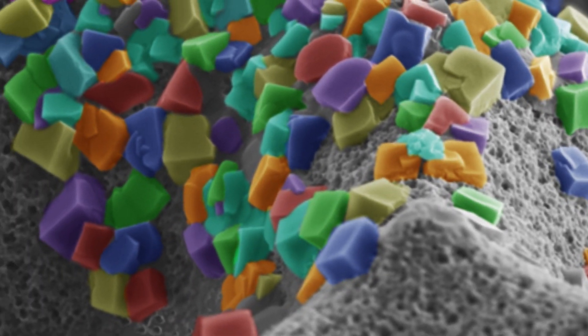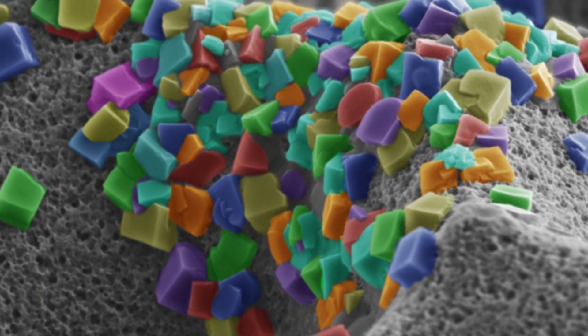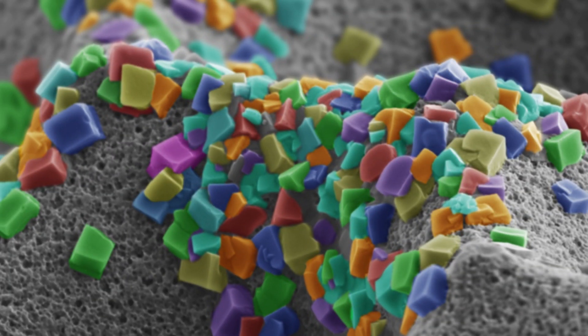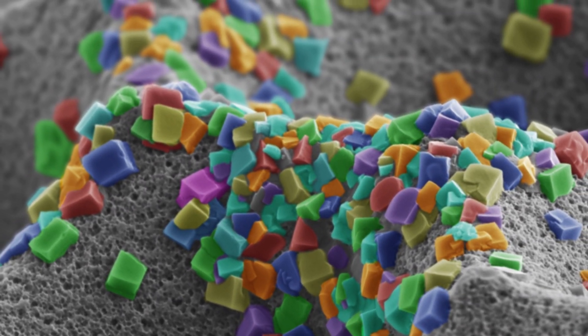I named this image the Little Rock Candy Mountains. It shows the surface of a radiolarian, which is a microorganism that lives in the oceans and the surface waters.